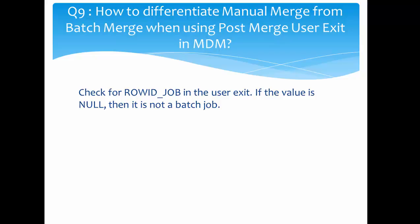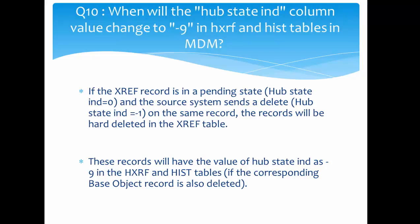How do you differentiate manual merge from batch merge — specifically, when should you use the post-merge user exit in MDM? If you want to write logic in the post-merge user exit based on whether it's a manual merge or a batch merge, you should check the ROW_ID_JOB attribute. If the value of ROW_ID_JOB is null, it is not a batch job — meaning it is a manual merge. Using that convention, you can implement your conditional logic.